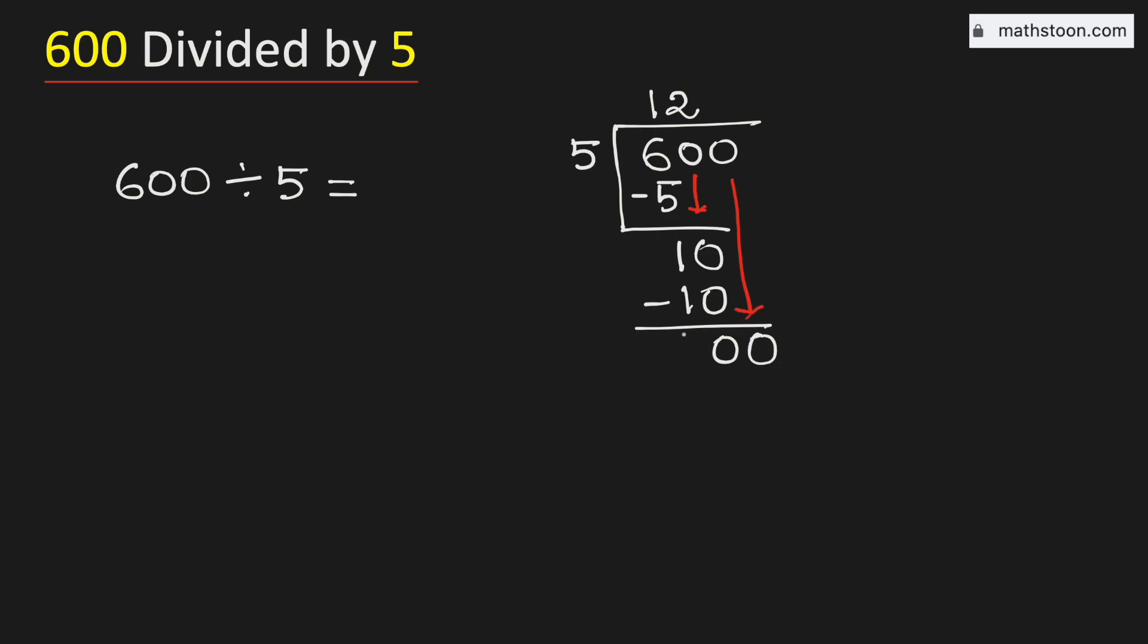But this is the number 0. So remove 1 0. And we know 5 times 0 is 0. Subtract, we get 0.